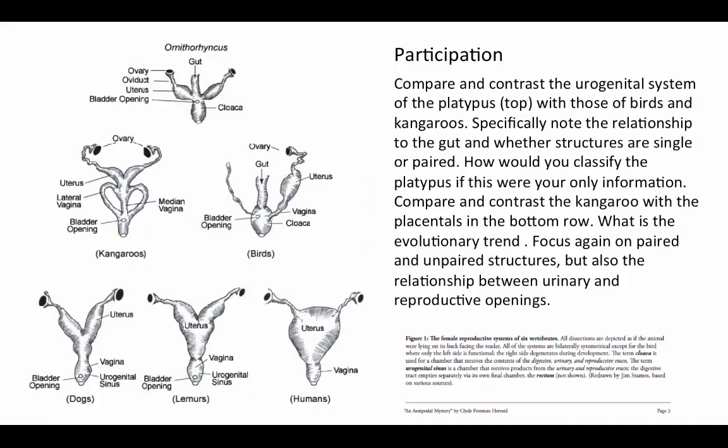Thinking about this diversity, on Wednesday we'll continue with this exercise considering more of the placental mammals. We're going to compare and contrast the kangaroo with the placentals, looking at evolutionary trends and focusing on paired and unpaired structures, as well as the relationship between urinary and reproductive openings.